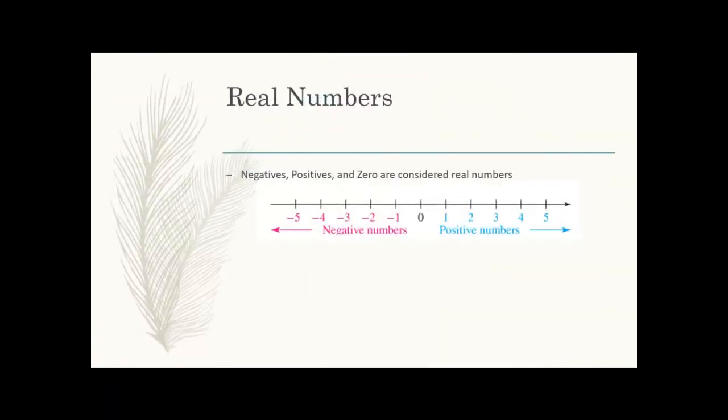This session is on multiplying and dividing with real numbers. So what is a real number? If you think of a number, basically any negative numbers, positive numbers, and zero are all considered real numbers. Zero is not positive or negative, so it doesn't really have a sign. That's why it is separated out from the negatives and the positives.